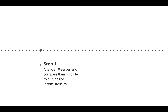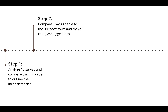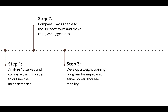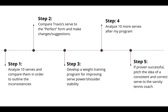The first step in my program is to gather data on the first 10 serves. Using the ZEP technology, I will outline the inconsistencies of that data. The second is to compare Travis's serve mechanics to the perfect form mechanics. The third is to give Travis a series of exercises to increase power and consistency. The fourth is to analyze data of another 10 serves after my program. The fifth step is to see if the varsity coach wants to utilize my program.